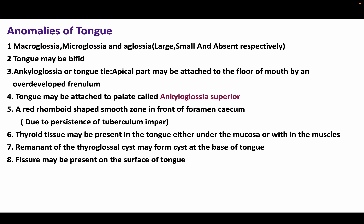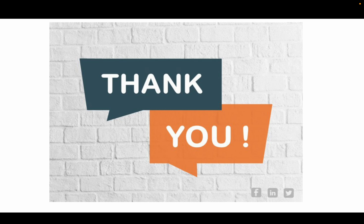The anomalies of the tongue include macroglossia (large tongue), microglossia (small tongue), and aglossia (absent tongue). The tongue may be bifid, or there may be ankyloglossia (tongue tie), where the apical part is attached to the floor of the mouth by an overdeveloped frenulum. The tongue may be attached to the palate (ankyloglossia superior). A red rhomboid-shaped smooth zone in front of the foramen cecum can be seen due to persistence of the tuberculum impar. Thyroid tissue may be present in the tongue, and remnants of the thyroglossal cyst may form a cyst at the base of the tongue. Fissures may also be present on the surface of the tongue.